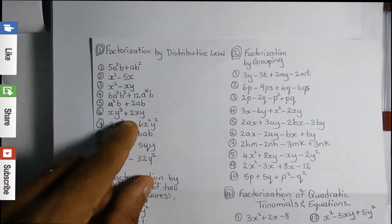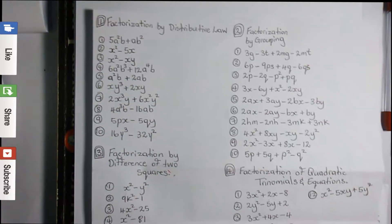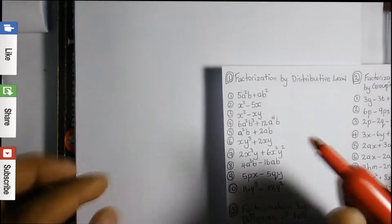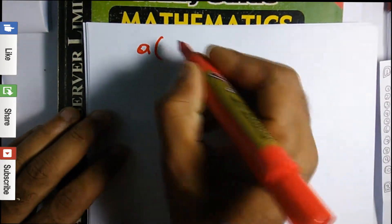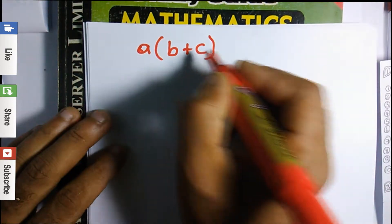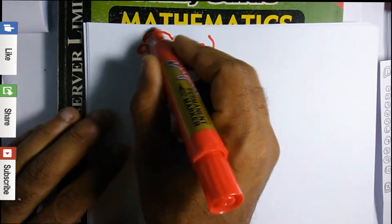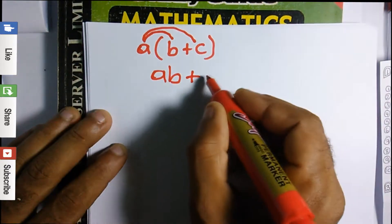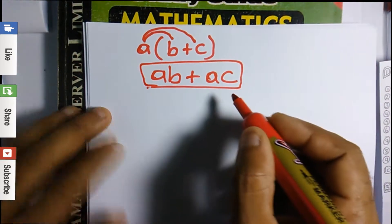With the first one, factorization by distributive law — all of these questions are possible exam questions. As the name suggests, I'll first go over distributive law. So let's say we have a bracket (b + c) and we apply distributive law to expand: we multiply a times b, then a times c, giving us ab + ac.